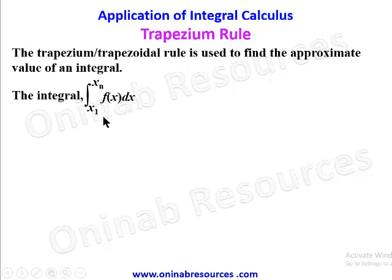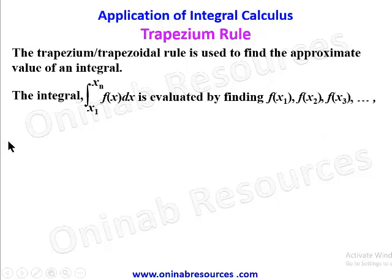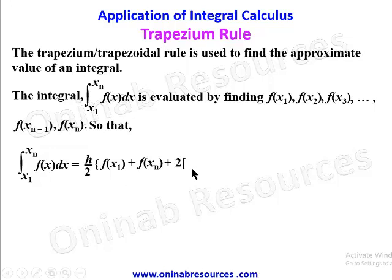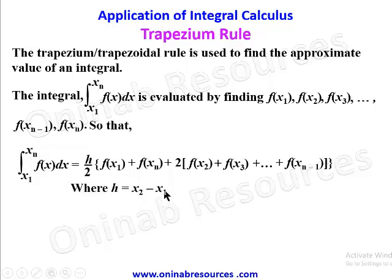The integral of f(x) dx from x₁ to xₙ is evaluated by finding f(x₁), f(x₂), f(x₃) up to f(xₙ₋₁) and f(xₙ). The formula is: h/2 times [f(x₁) + f(xₙ)] plus 2 times the remaining values f(x₂), f(x₃) up to f(xₙ₋₁), where h = x₂ − x₁.